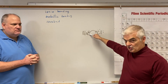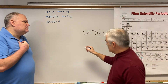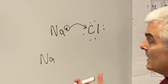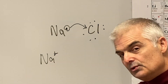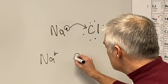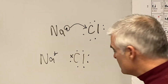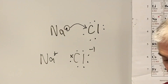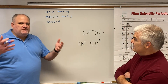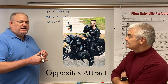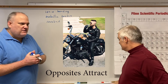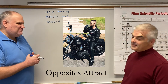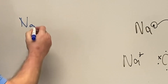Chlorine now really has 8, with 8 in the previous shell. When sodium loses his one valence electron, his charge becomes positive — because if you lose something negative, you have a positive charge. And the chlorine, who now has 8 electrons including the one from sodium, has a charge of negative 1. Opposites attract — that's the ionic bond.